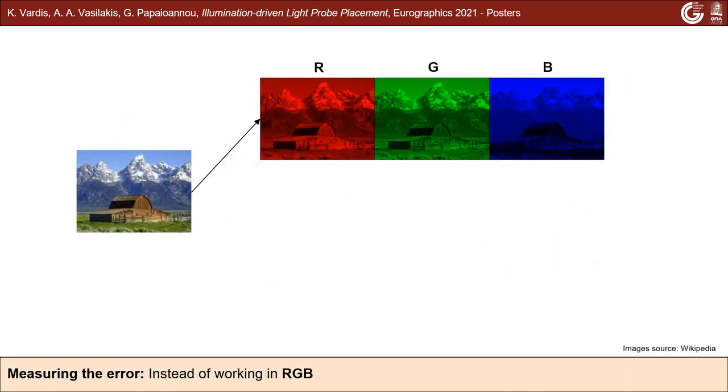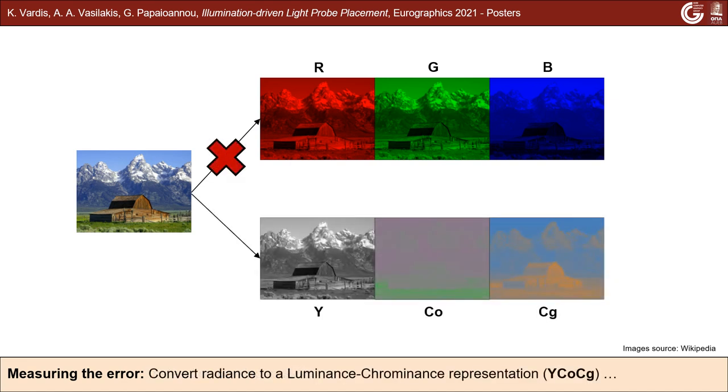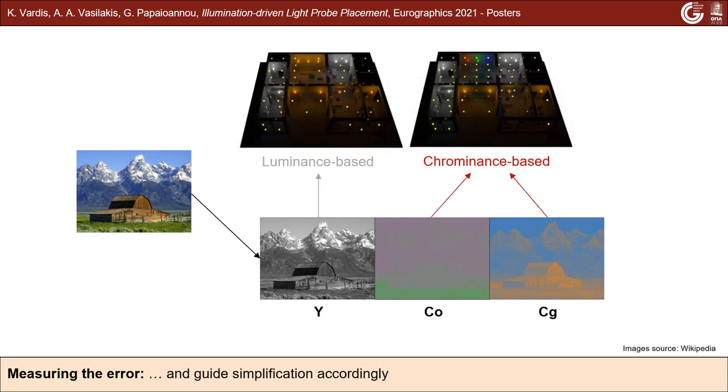To measure the error, we compute the incident energy at each evaluation point. However, RGB does not provide a meaningful representation for illumination. So, we convert radiance to a luminance-chrominance representation and use these as criteria for more perceptually meaningful measurements.